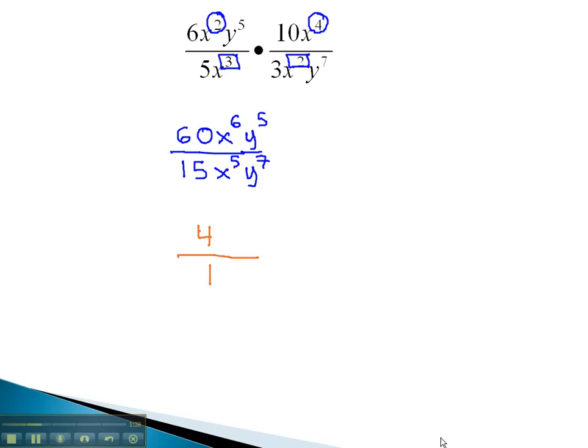We can now reduce the variables by subtracting the exponents. On the x's, 6 minus 5 gives us x to the 1st. Because it's positive, we put it in the numerator, and we do not need to write the 1.